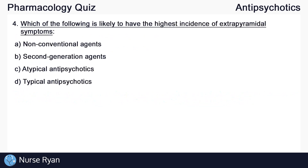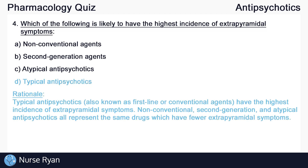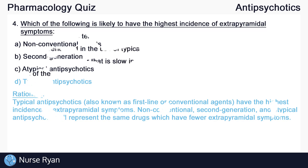Question number four: which of the following is likely to have the highest incidence of extrapyramidal symptoms? The answer here is D, typical antipsychotics. Typical antipsychotics have the highest incidence of extrapyramidal symptoms. Non-conventional, second generation, and atypical antipsychotics all represent the same drugs, which have fewer extrapyramidal symptoms.